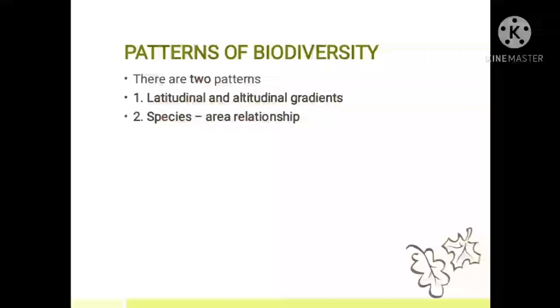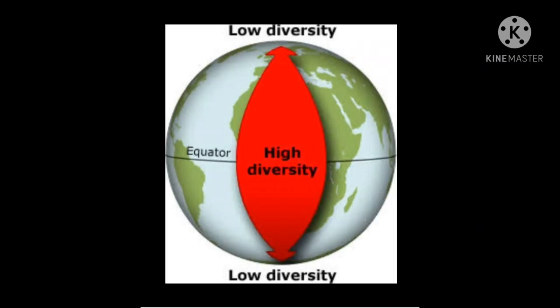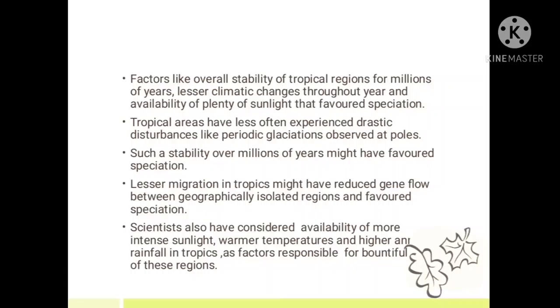Now, patterns of biodiversity. There are two patterns: latitudinal and altitudinal gradient, and species-area relationship. Ecological studies have revealed that the distribution of diversity is not uniform around the globe. Species richness exhibits a latitudinal gradient for many plants and animals — it is high at lower latitudes and there is a steady decline towards the poles.